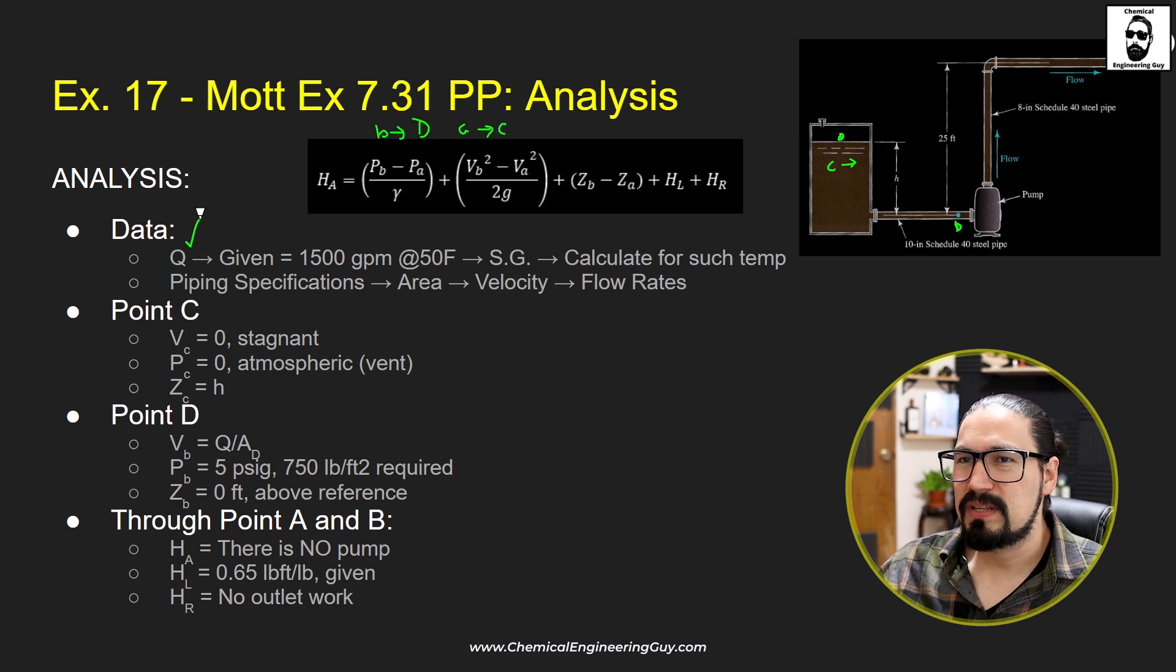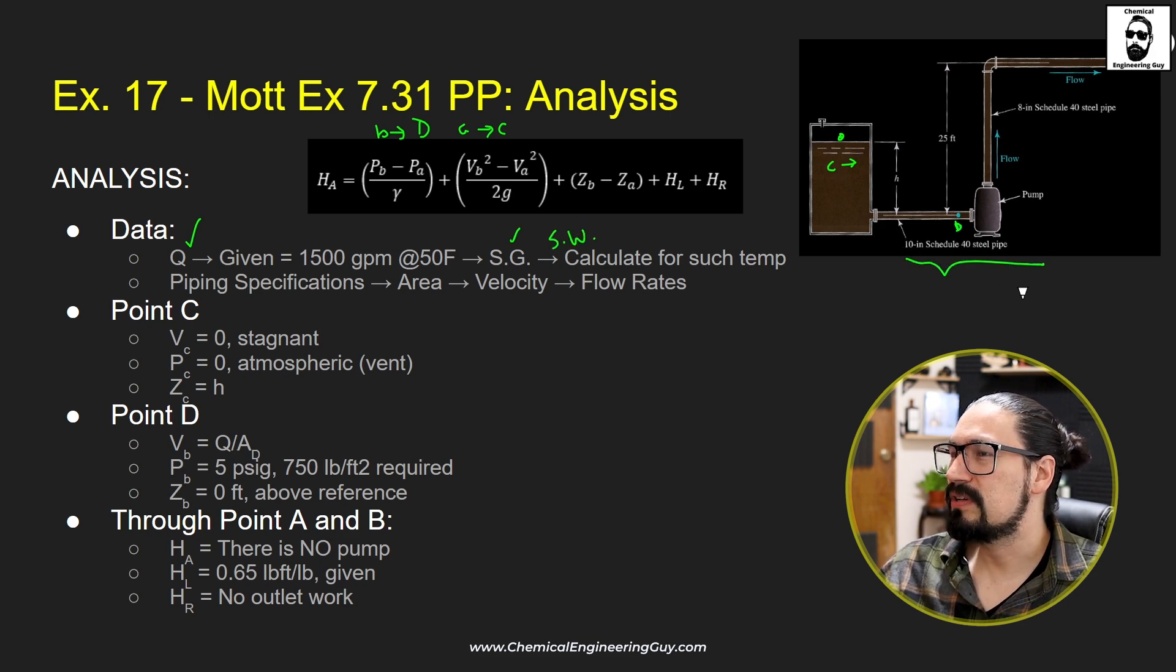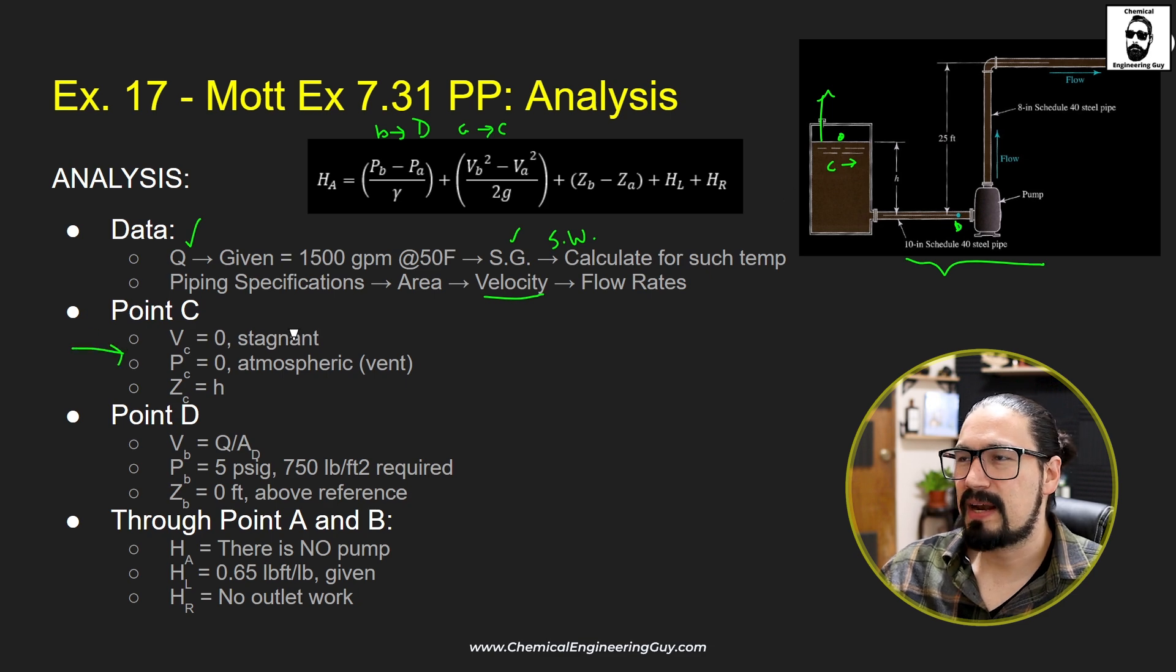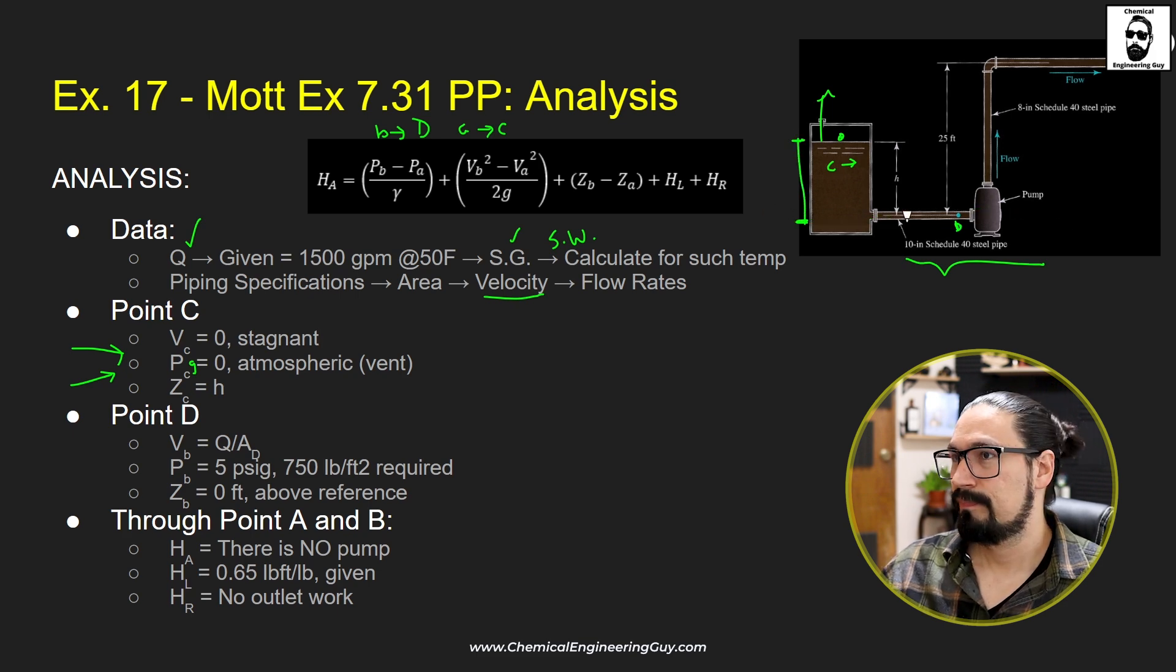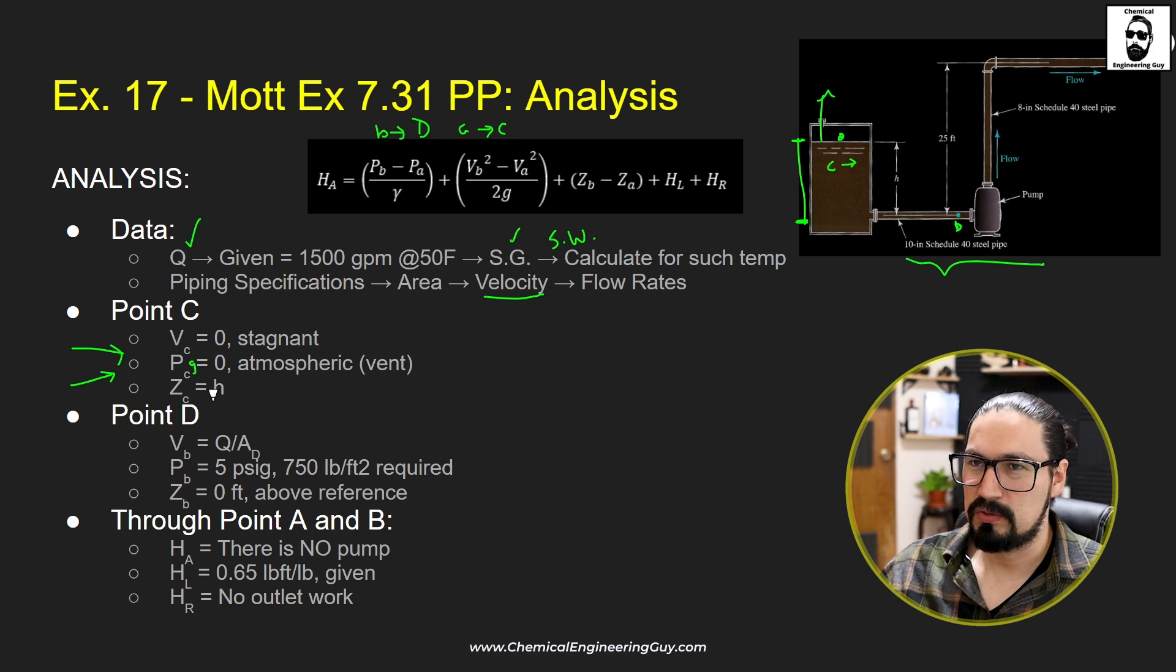Volumetric flow rate is given. With temperature we know the substance and can calculate the specific gravity and specific weight of water. We know the piping specification is a 10 inch diameter schedule 40 steel pipe. From point C, you can see that this is open to the air, so this is a vent. Velocity in a tank will be stagnant, so velocity is zero. Pressure will be zero because I'm going to be using gauge. The height I don't know, but I want to make the reference value the point of the suction line. This is H.